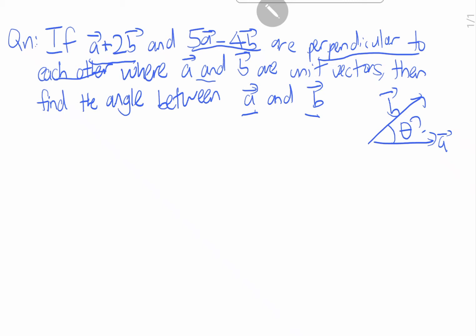So this means that, based on our previous video, we know that for a dot product, if this is perpendicular to this, this means that A plus 2B dot product of 5A minus 4B equals to 0.